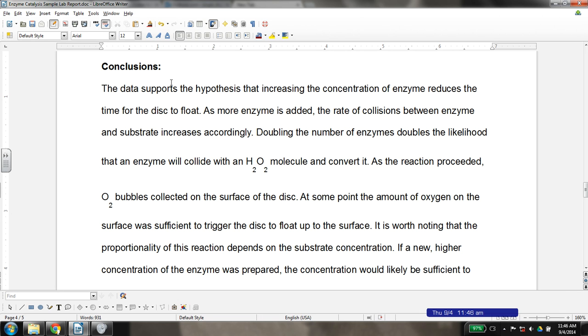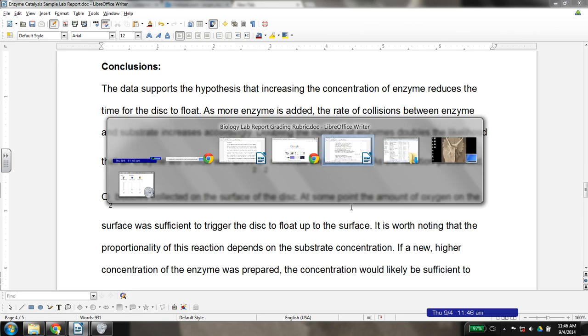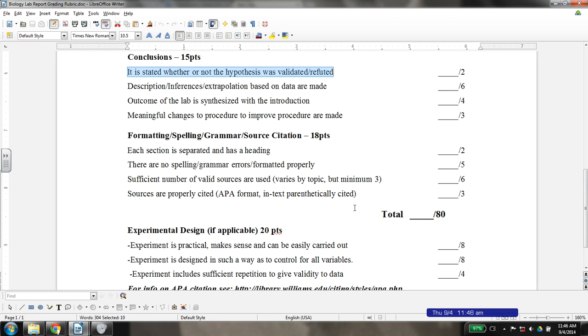As noted, this will cover our conclusion section and let's go to the rubric. If you've not already watched the other sections, I encourage you to do so before this one. This section of the lab report is worth 15 points, and the very first thing you should do is state whether your hypothesis was validated or refuted.